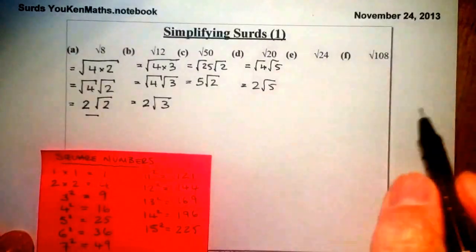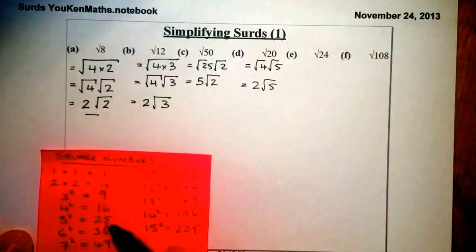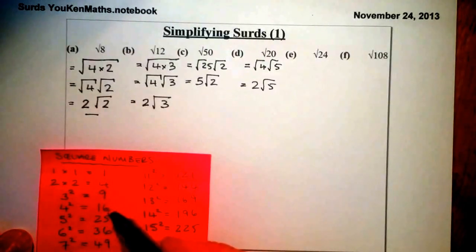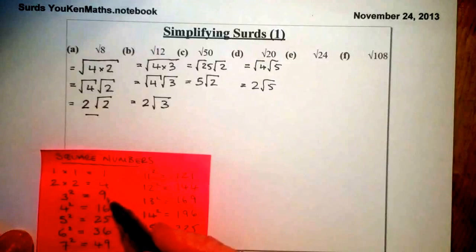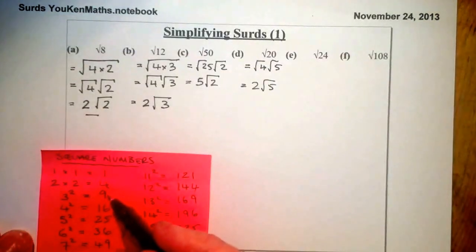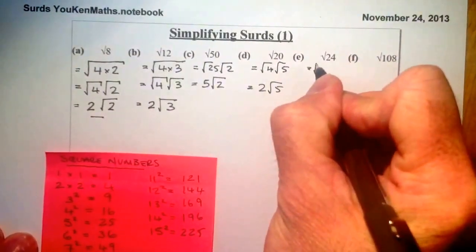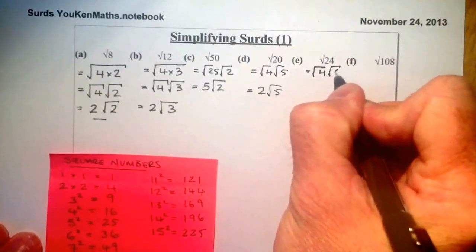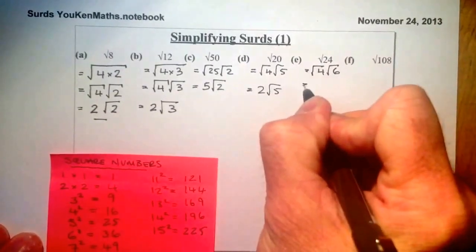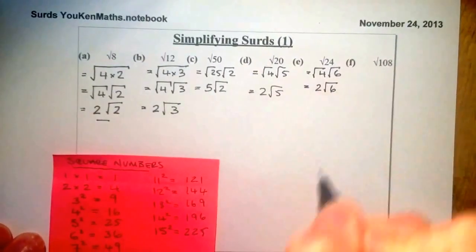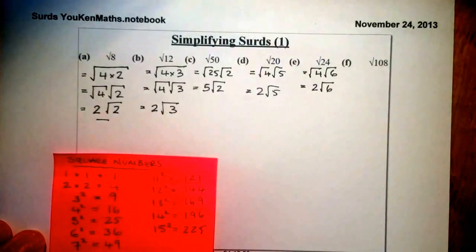For root 24: I'm looking for a square number. Half of 24 is 12, so I think about root 12 times 2 — but 12 isn't a square number. 9 can't help me, so I go to 4. That gives root 4 times root 6, which is 2 root 6. That's my final answer for that one.